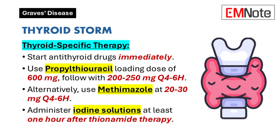Propylthiouracil is often preferred due to its rapid onset and ability to inhibit the conversion of thyroxine to triiodothyronine. A loading dose of 600 mg should be given orally or via a nasogastric tube, followed by doses of 200 to 250 mg every 4 to 6 hours.